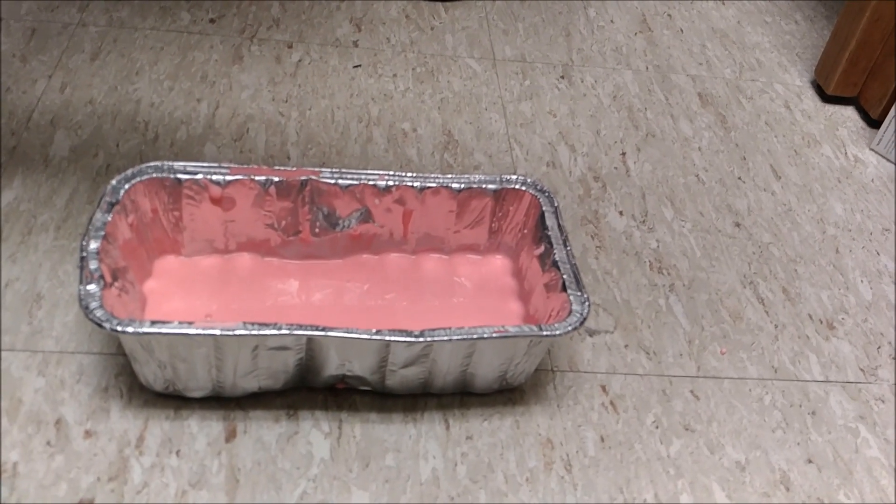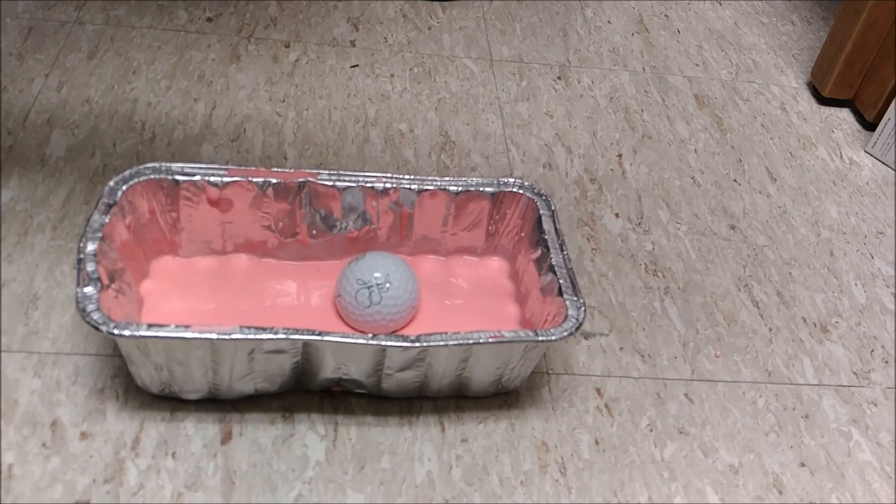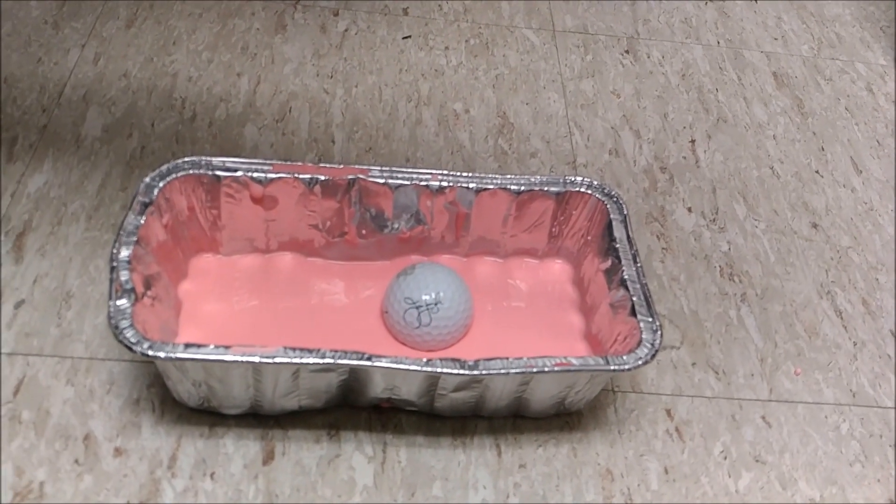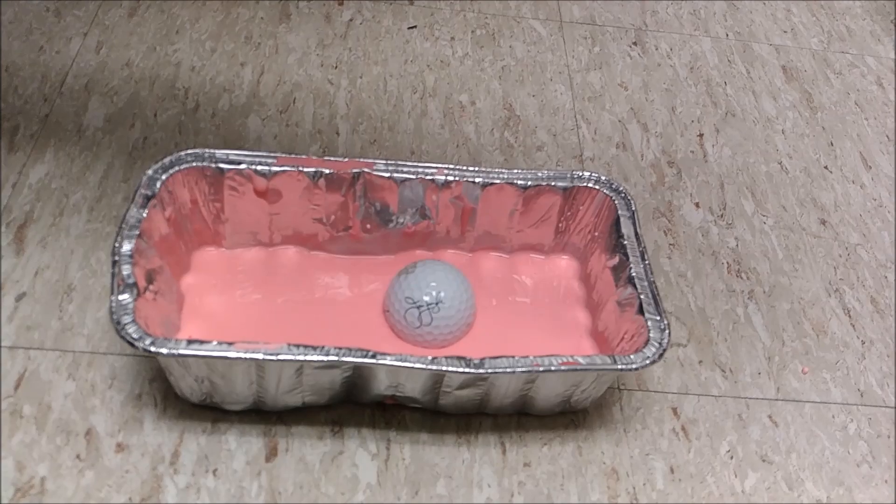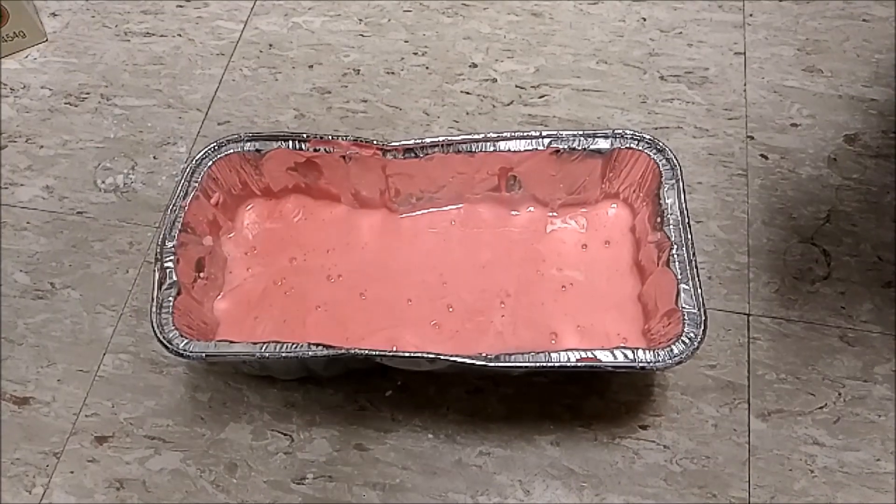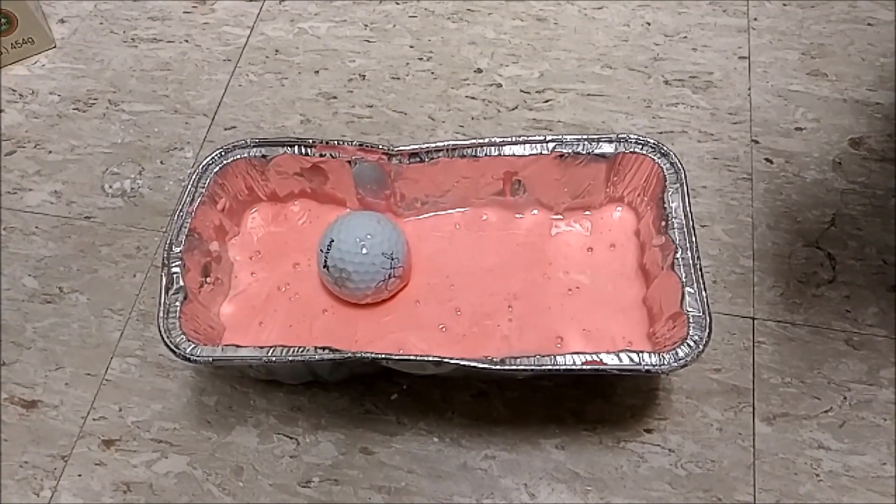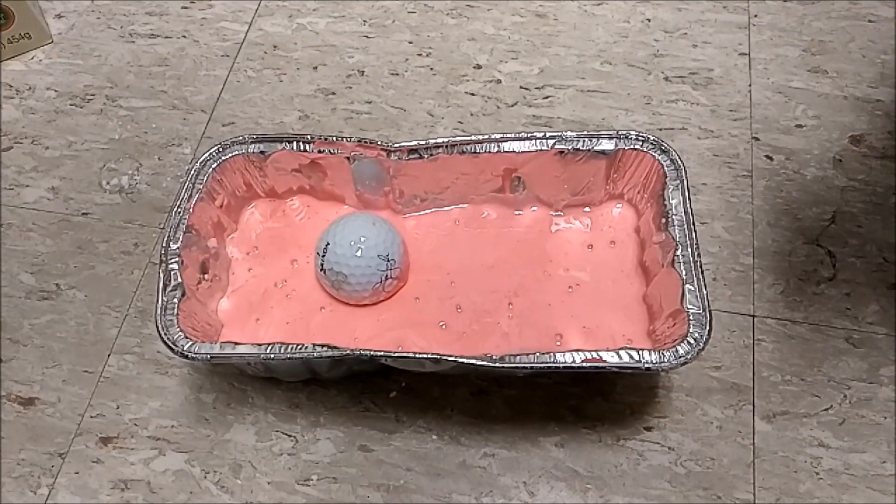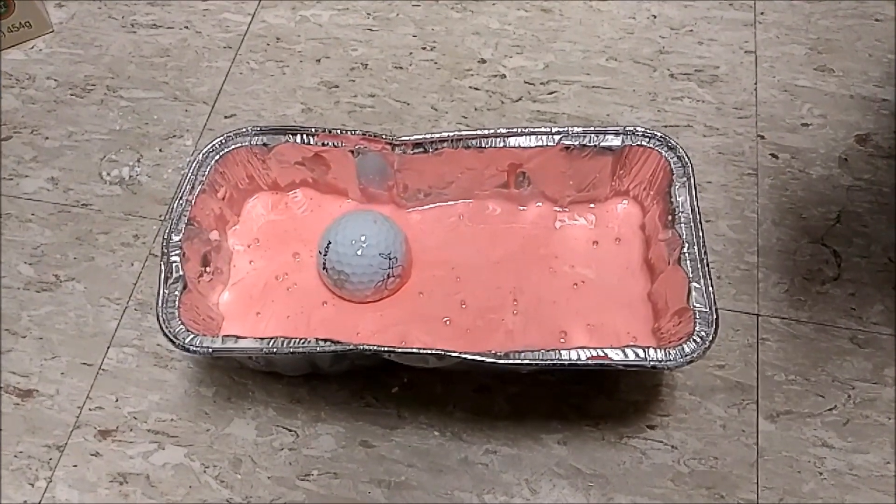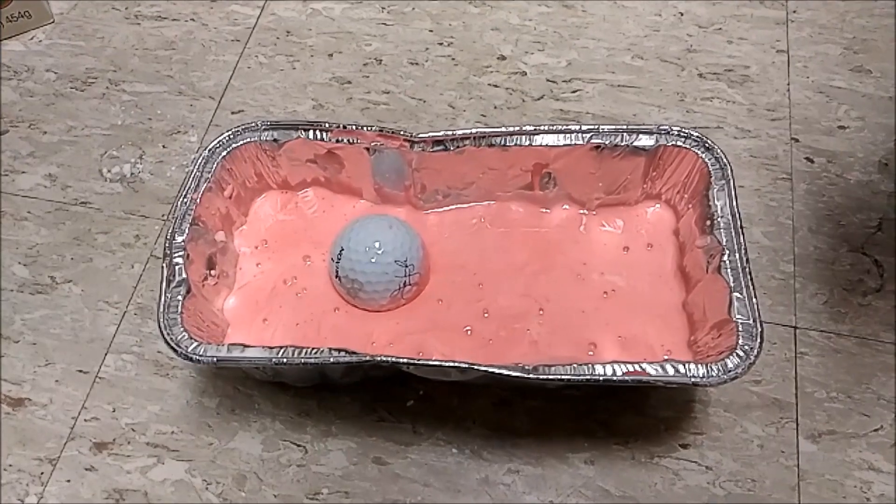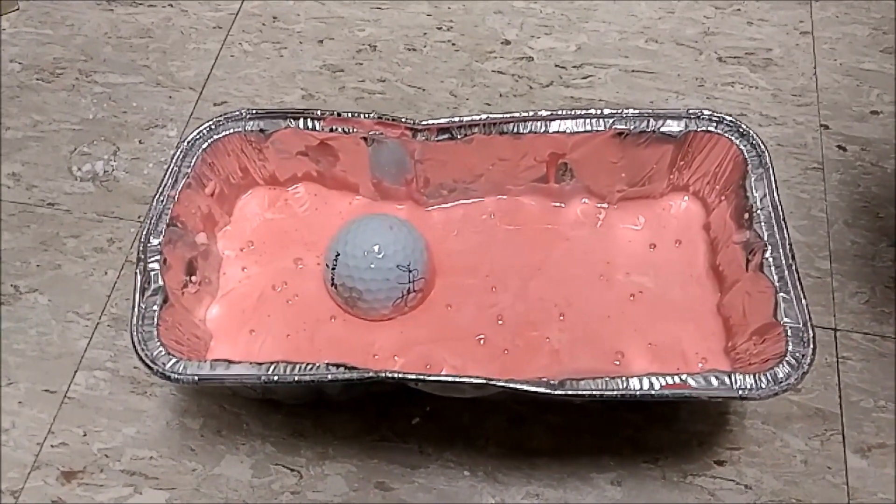Next, we drop a golf ball into the oobleck to see how it'll sink into the fluid. When played in slow motion, you'll notice that it looks like the golf ball lands on a solid surface. Again, this is due to the relationship between du over dy and shear stress. After it lands, though, the golf ball slowly begins to sink into the fluid.